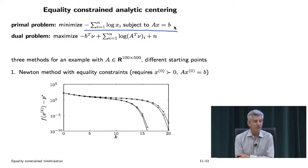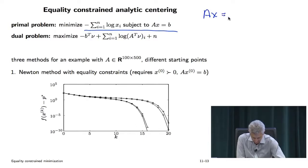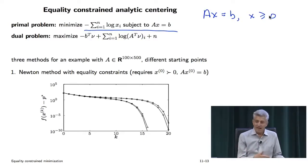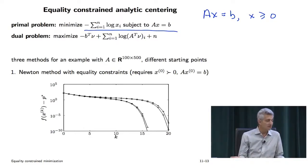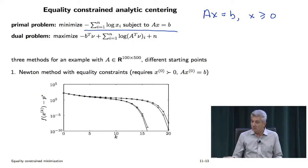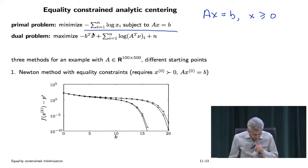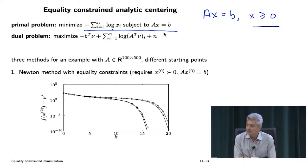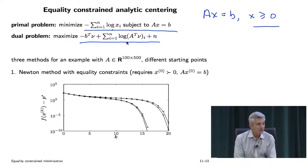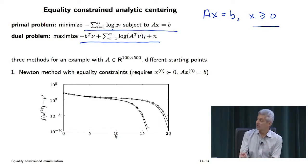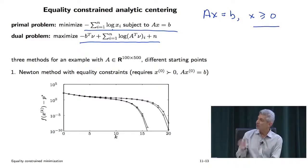We want to calculate the analytic center of Ax = b with x non-negative — that's the feasible set for a classic linear program. The analytic center is found by minimizing the sum of negative logs, which is the barrier associated with that set, subject to Ax equals b. The dual of that problem involves maximizing a related expression. Since the original function is strictly convex, if you know the dual solution you can recover the primal solution. The dual is essentially unconstrained, but with an implicit constraint that A-transpose nu is positive — so the domain is an open polyhedron.